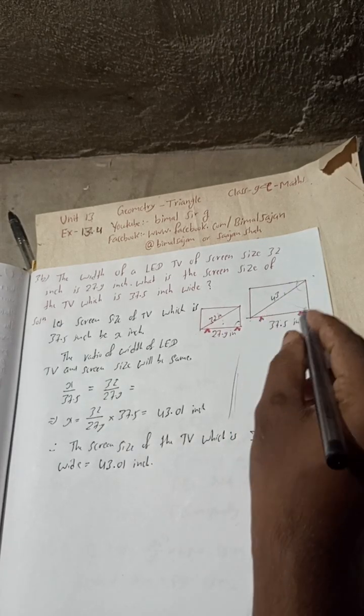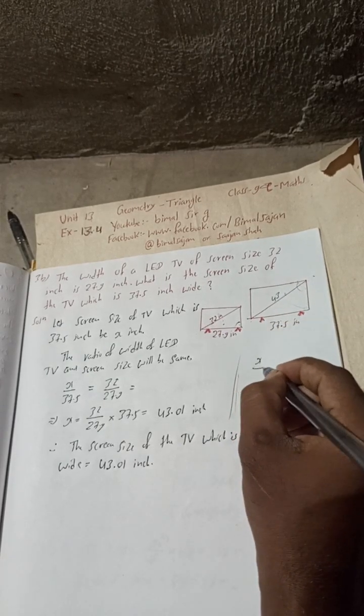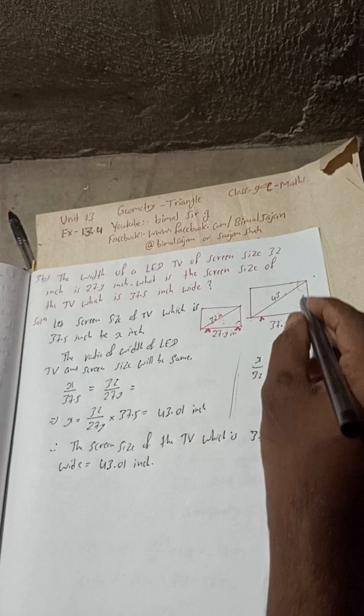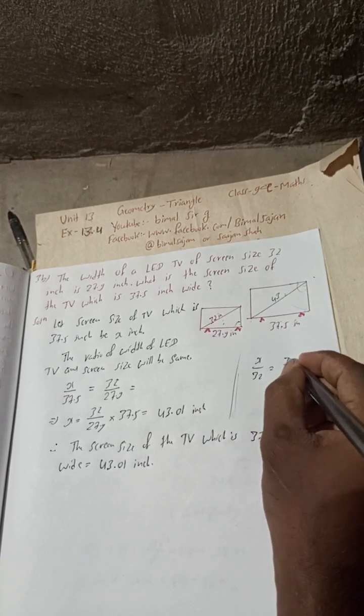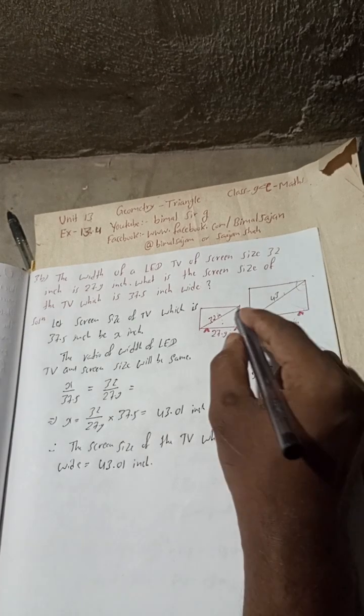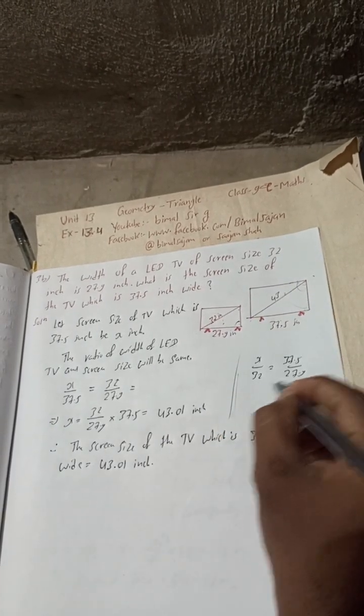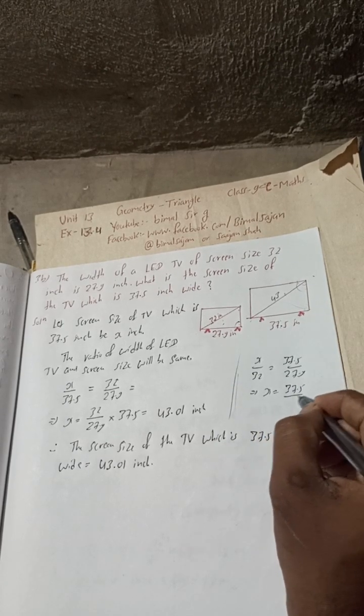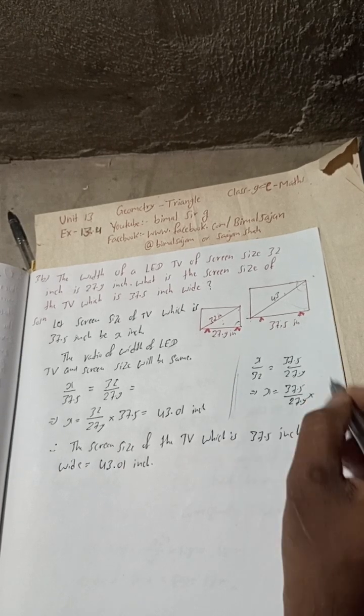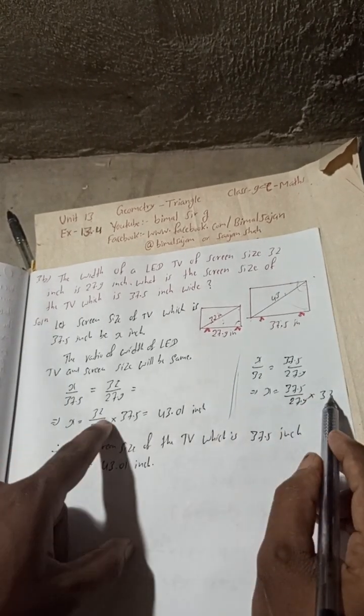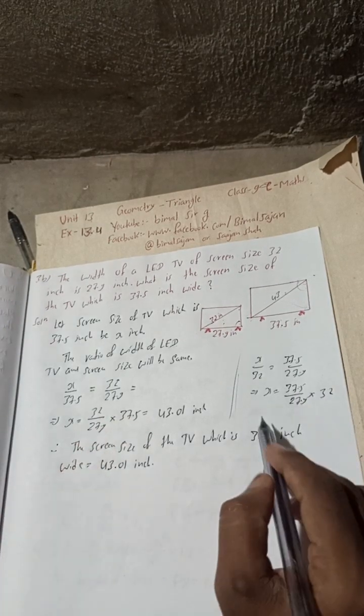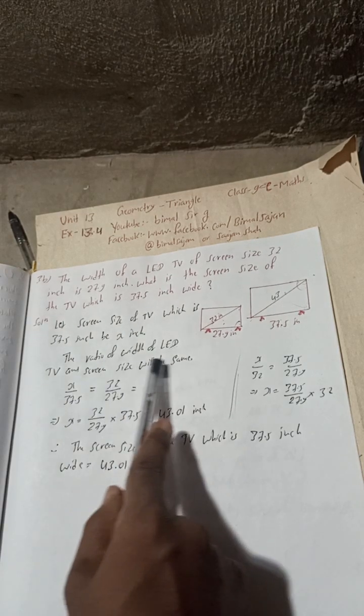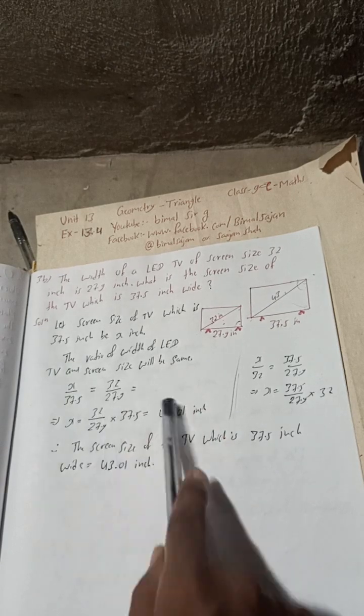Suppose this is a similar triangle. Then the ratio would be x by 32 equals 37.5 by 27.9. When we cross multiply, x equals 37.5 divided by 27.9 times 32. See, we got 32 times 37.5 by 27.9, same as before. So this is the trick in this question. You have to know the ratio of width of the TV and screen size will be the same.